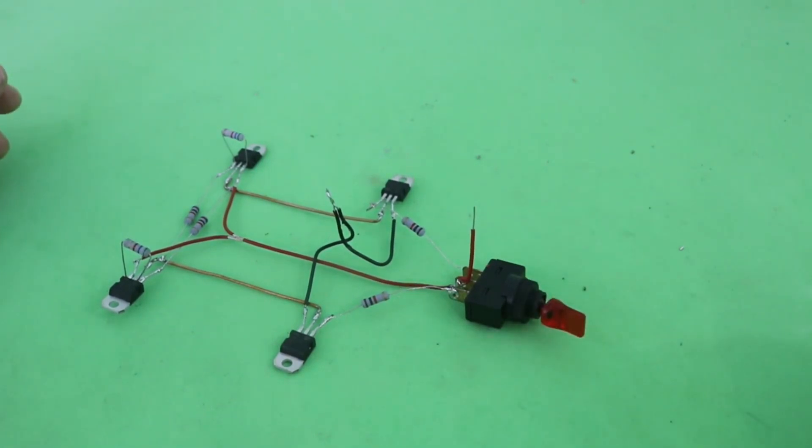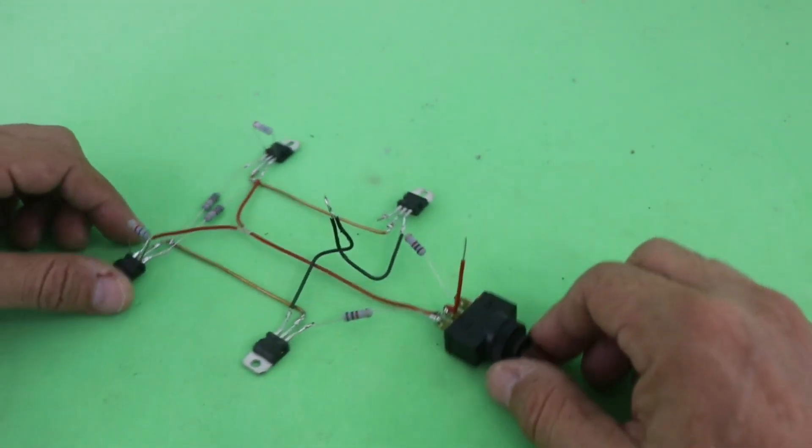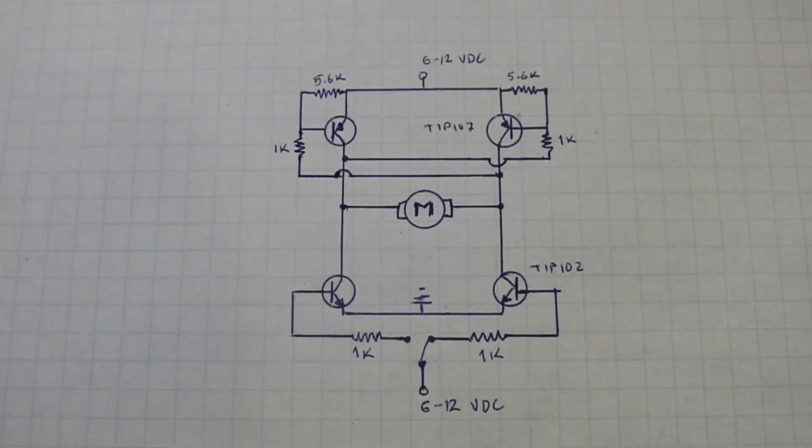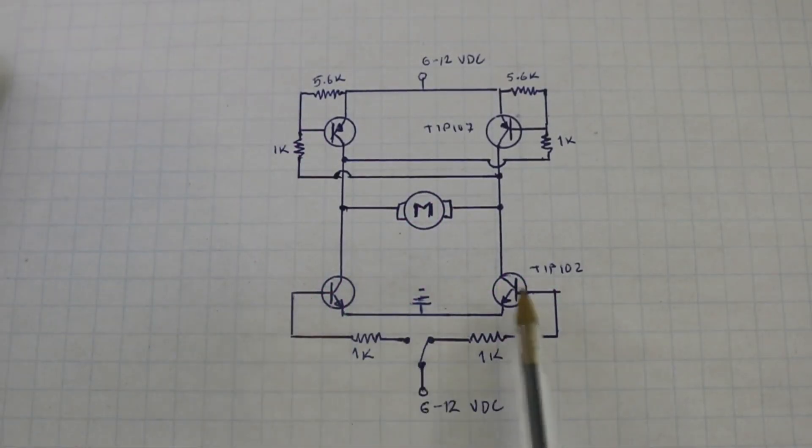So let's see the diagram to explain how it works before making a test. Ok, here it is. The circuit has these two transistors which are PNP type, NPN sorry, and the transistors at the top are PNP.